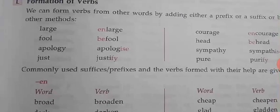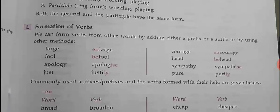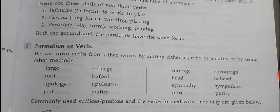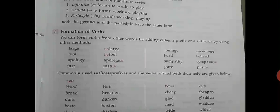Now we come to the formation of verbs, which we will begin in the next video. To recap: a finite verb has tense; non-finite verbs retain the same form regardless of subject and expand the meaning. There are three kinds of non-finite verbs: infinitive ('to work', 'to play'), gerund, and participle ('working', 'playing'). Gerund and participle share the same form. Thank you and have a nice day — see you in the next video.